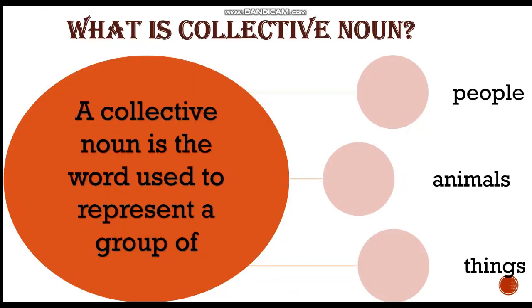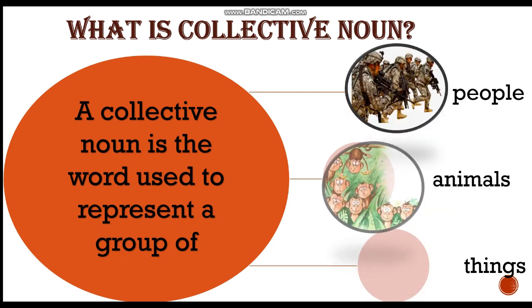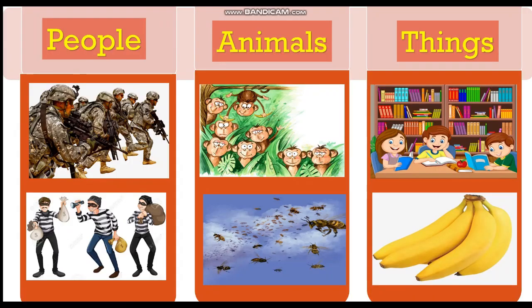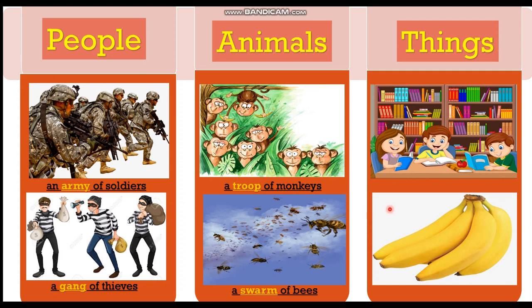Before moving towards the solution, let's recall what a collective noun is. A collective noun is the word used to represent a group of people, animals, or things. For example: an army of soldiers, a gang of thieves, a troop of monkeys, a swarm of bees, a library of books, a bunch of bananas.